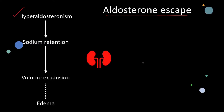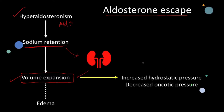Let us look into the physiological mechanisms behind this observation. In hyperaldosteronism there is a high level of aldosterone, so there is increased retention of sodium from the kidney. This leads to expansion of ECF volume.